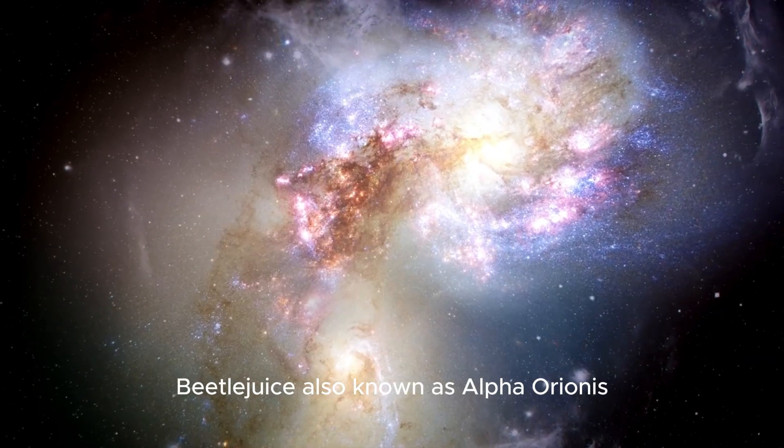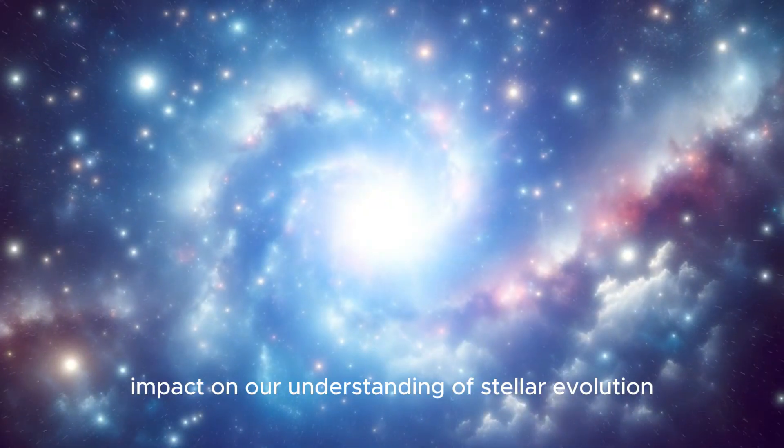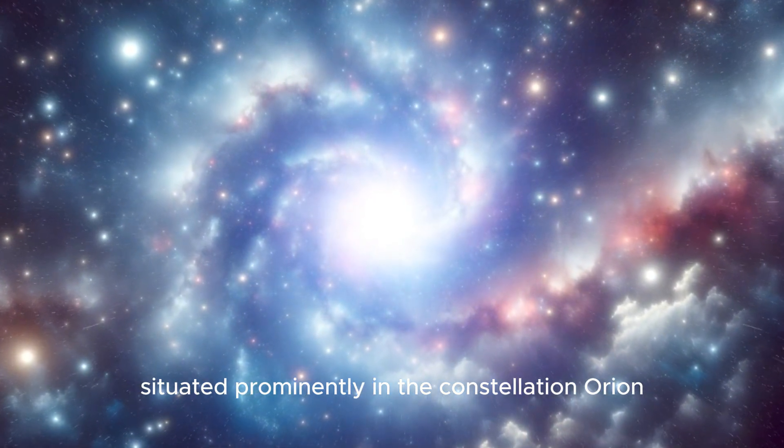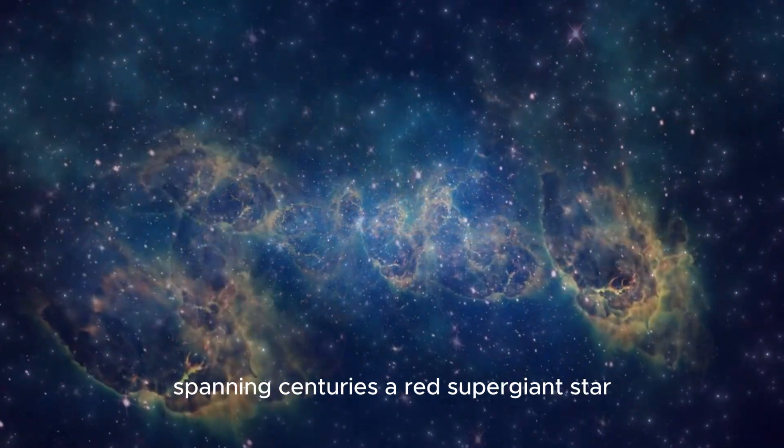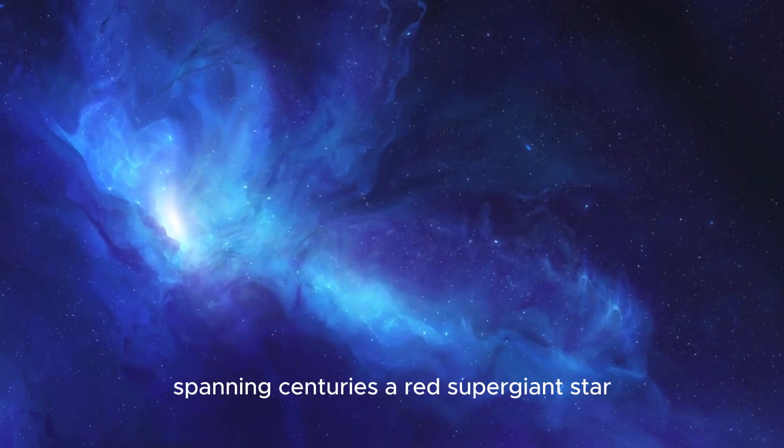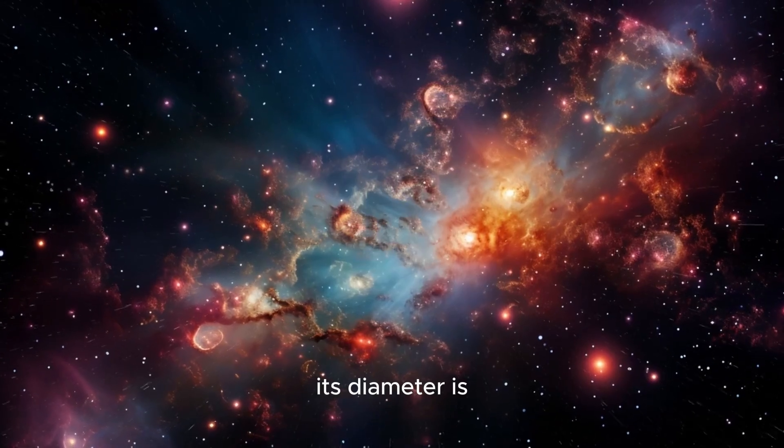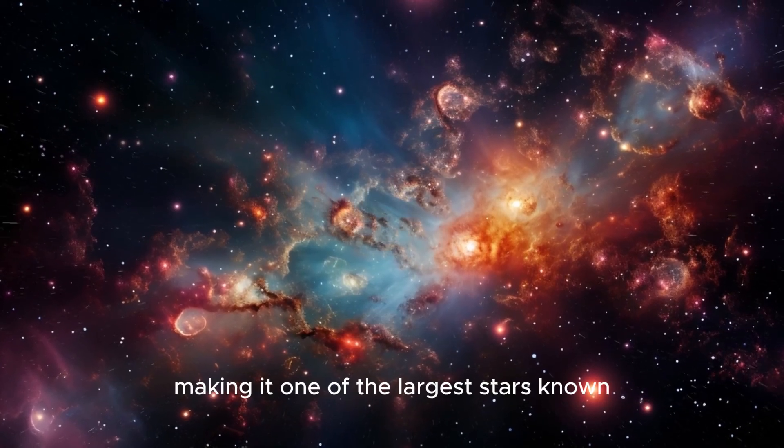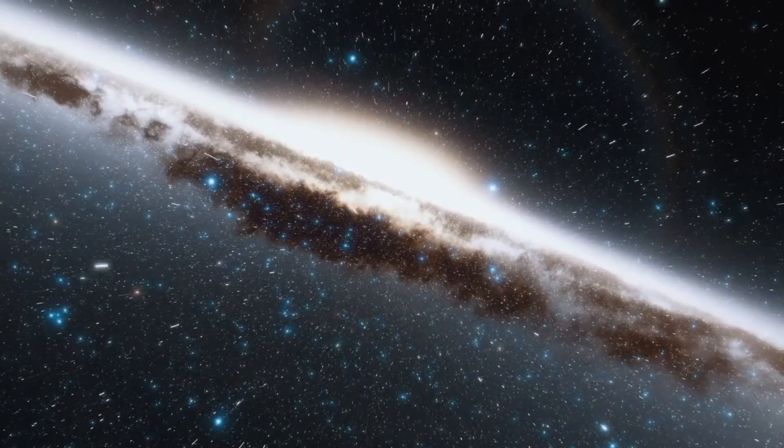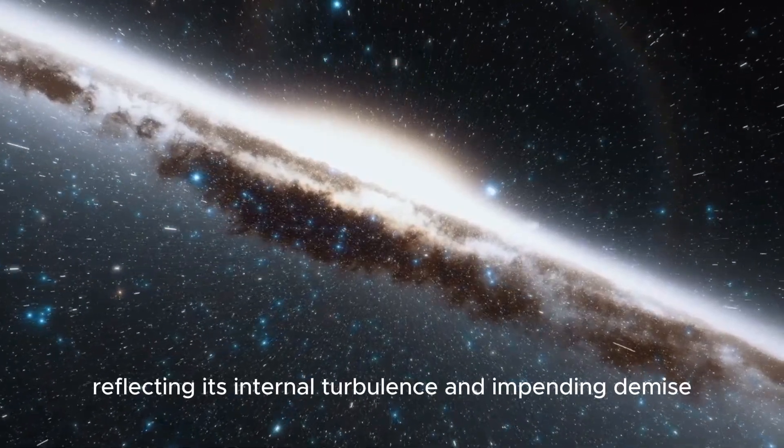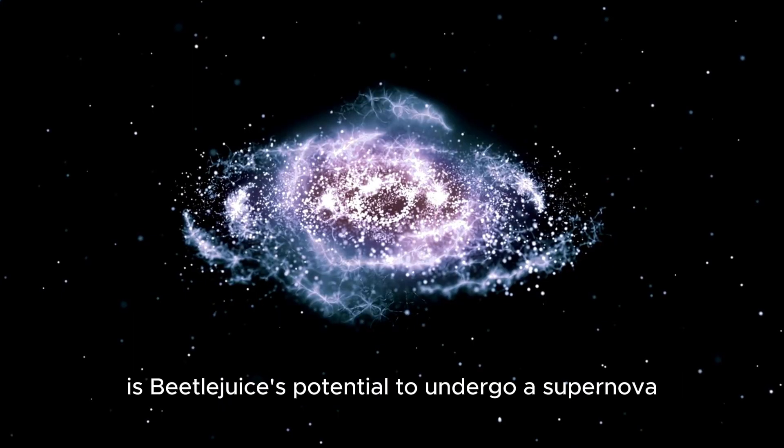Betelgeuse, also known as Alpha Orionis, continues to intrigue astronomers with its dynamic behavior and significant impact on our understanding of stellar evolution. Situated prominently in the constellation Orion, Betelgeuse has garnered attention not only for its astronomical importance, but also for its cultural and mythological significance spanning centuries. A red supergiant star, Betelgeuse is nearing the end of its life cycle, characterized by its immense size and unstable nature. Its diameter is estimated to be about 1,000 times that of our sun, making it one of the largest stars known. Despite its enormous size, Betelgeuse is not a stable entity. It pulsates and varies in brightness over time, reflecting its internal turbulence and impending demise.